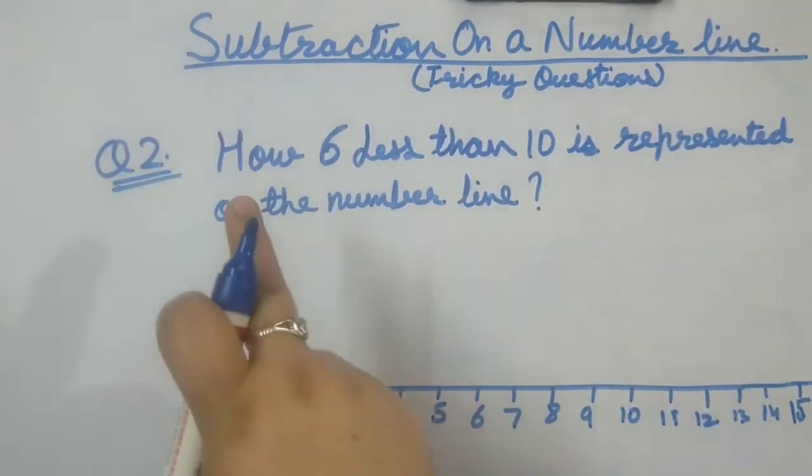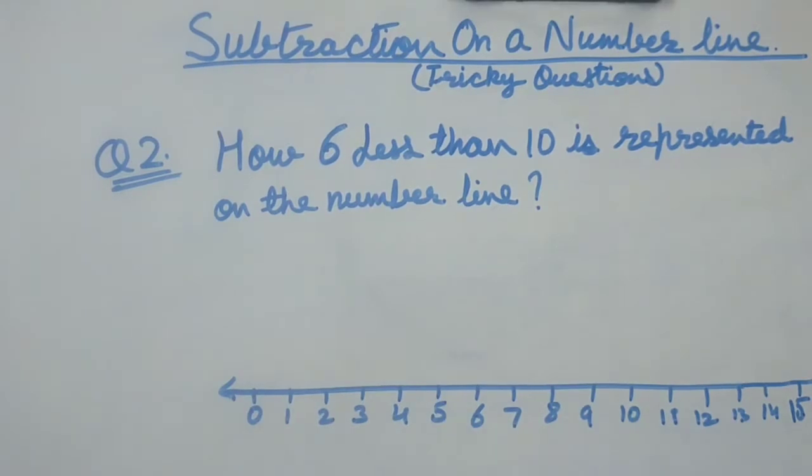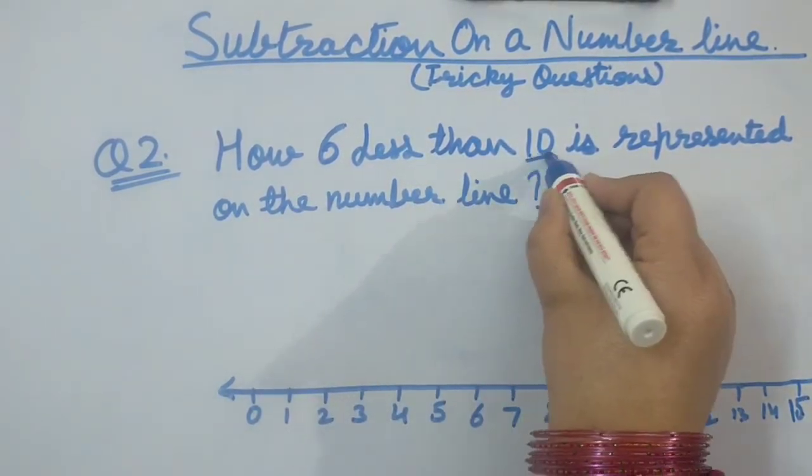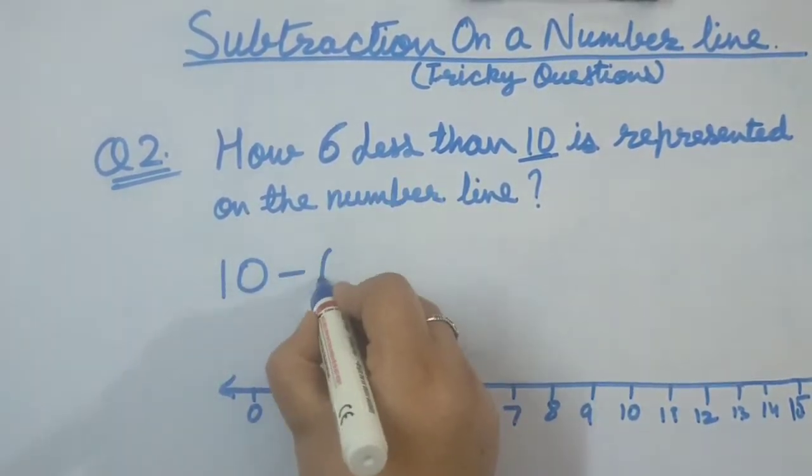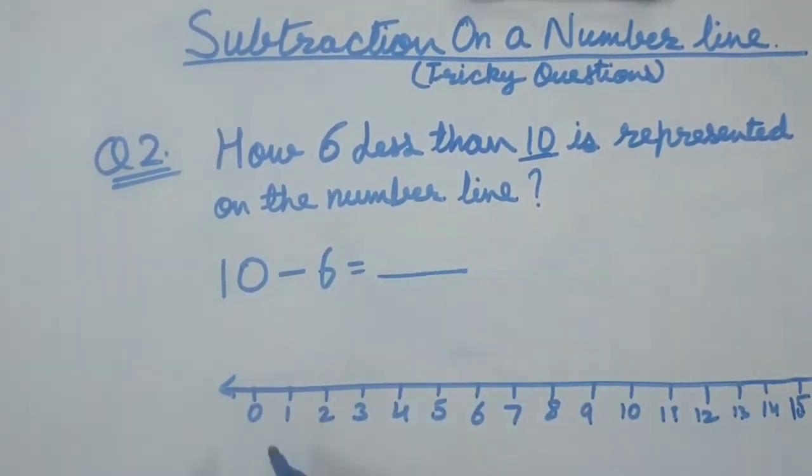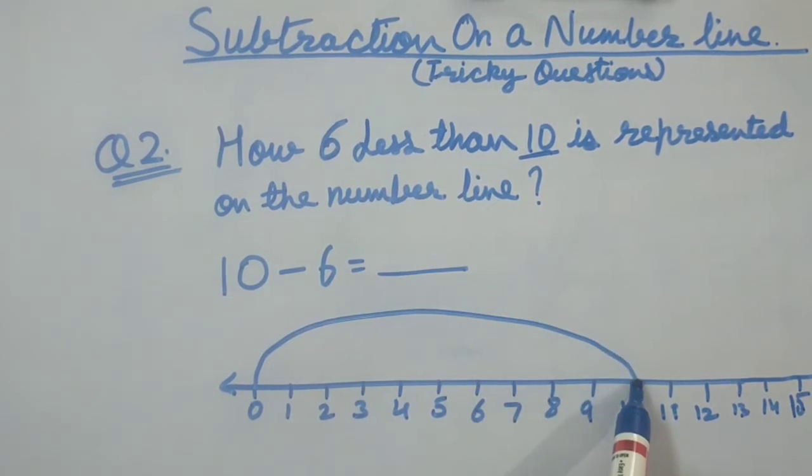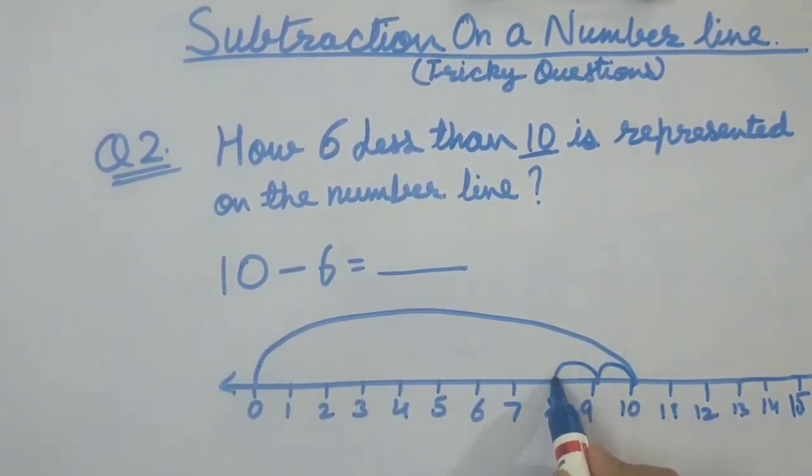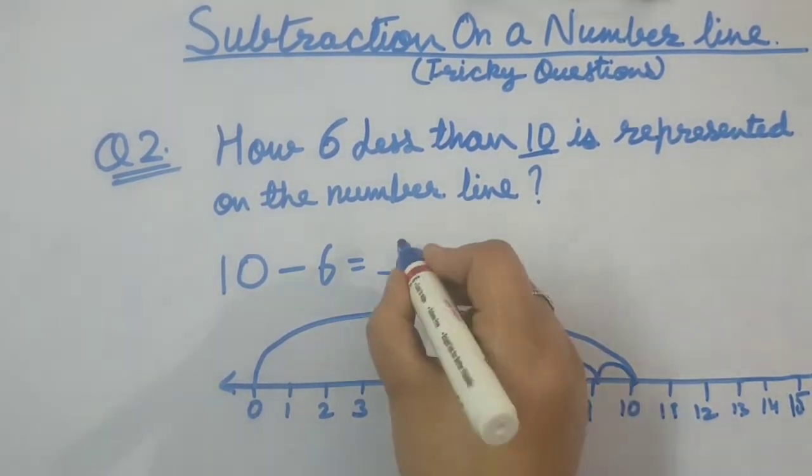Question number 2. How 6 less than 10 is represented on a number line? See, we will take out the question. 6 less than 10. That means 10 is the starting point. So 10 minus 6 equals to dash. Starting from 0, first leap is towards 10. Moving forward towards 10. How many steps backwards? 6. Counting 1, 2, 3, 4, 5 and 6. Answer came out to be 4.